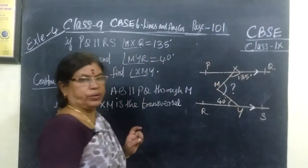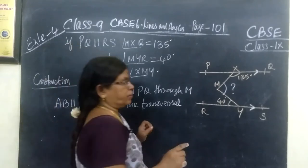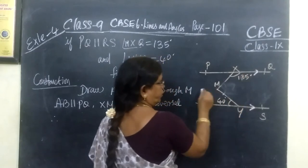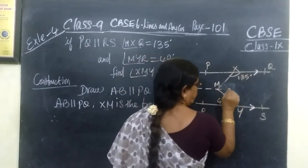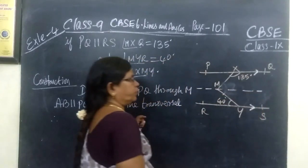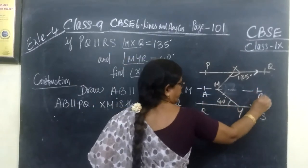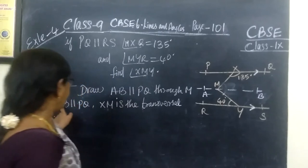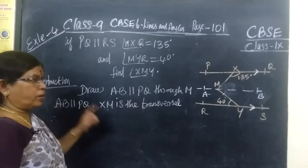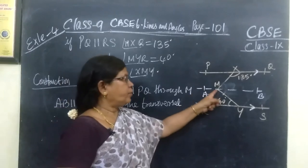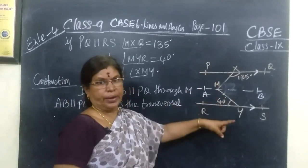Find XMY. So within one minute, we can say the answer for this. If it is 135, before that, you should draw a line parallel to PQ and RS such that you name this as AB. So AB parallel to PQ and also AB parallel to RS. A line parallel to another parallel lines are again parallel.